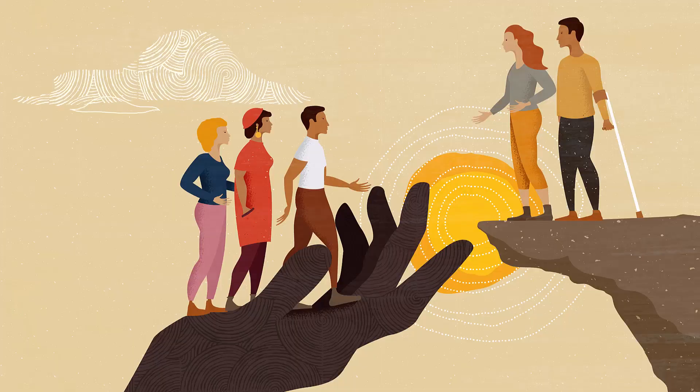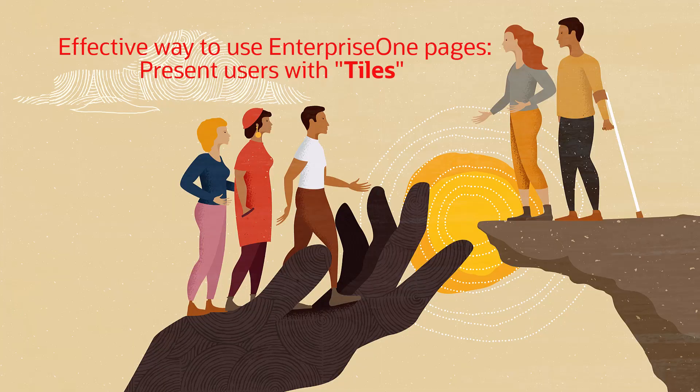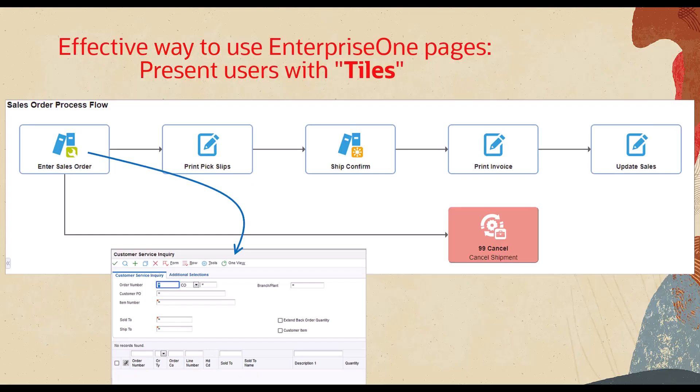One common and effective way to use Enterprise One pages is to present users with a set of images or icons — called tiles — that conveniently launch Enterprise One applications, reports, or even automated orchestrations. Using either a well-organized grid layout or lines and arrows to convey a business process, you can guide users to perform their daily operations easily and efficiently.